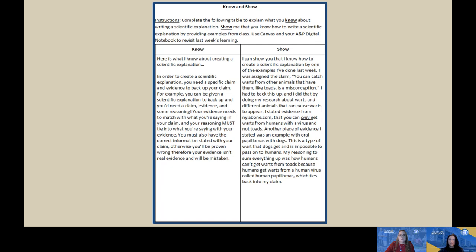Here is one example of a possible strategy for formative evaluation called a 'know and show.' Students describe in writing what they know about writing a scientific explanation, and describe how they would provide evidence to show what they know about creating that explanation. This could be done by substituting multiple content areas — a know and show is adaptable across subjects.